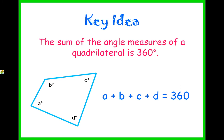Like triangles, where the sum of angle measures is 180 degrees, in a quadrilateral the angle measures add up to 360 degrees. So a plus b plus c plus d in this figure will add up to 360.